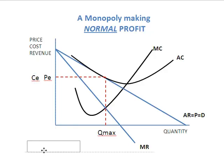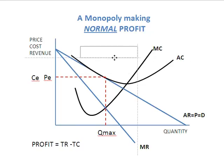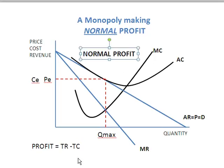Profit is total revenue minus total cost. In this particular case, total revenue minus total cost is going to be zero. We might normally think that's no profit, but in an economic definition, what we're calling that is normal profit. The reason it's normal profit is because we're talking about economic profit, which includes not just accounting profit, but also opportunity cost.